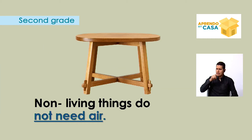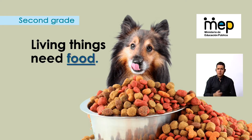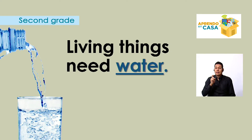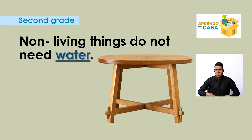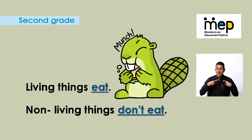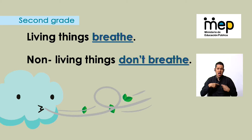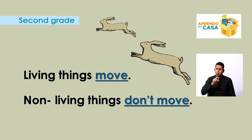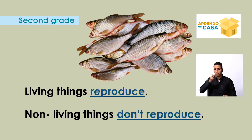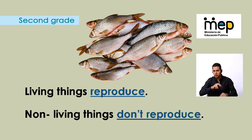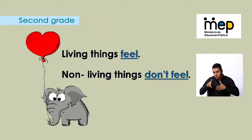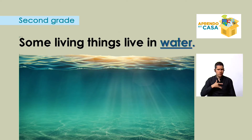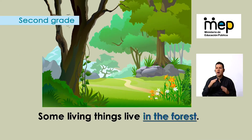Living things need food — non-living things do not need food. Living things need water — non-living things do not need water. Living things eat, just like me, and non-living things don't eat. Living things breathe and non-living things don't breathe. Living things move and non-living things don't move. Living things reproduce and non-living things don't reproduce. Living things feel and non-living things don't feel.